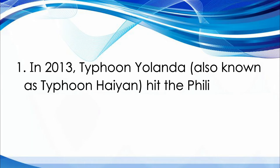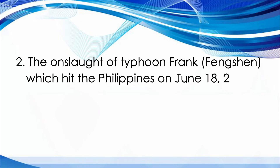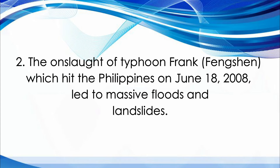Number 1: In 2013, Typhoon Yolanda, also known as Typhoon Haiyan, hit the Philippines. This typhoon was the deadliest typhoon in the country's history. Number 2: The onslaught of Typhoon Frang, or Phenichin, which hit the Philippines on June 18, 2008, led to massive floods and landslides.